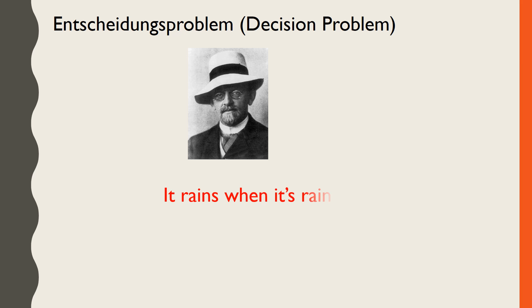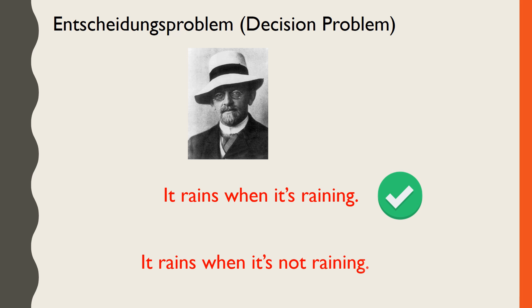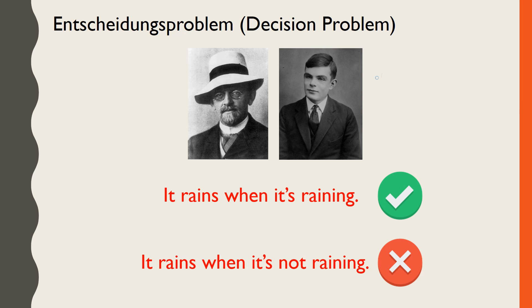For example, "It rains when it is raining" is true, and "it rains when it is not raining" is false. Specifically, Turing was interested in the question: what is computable?